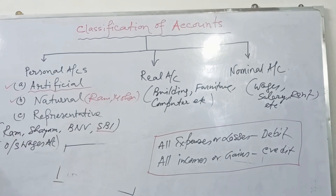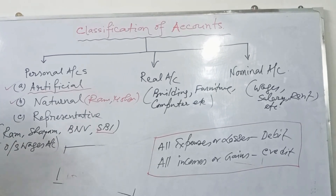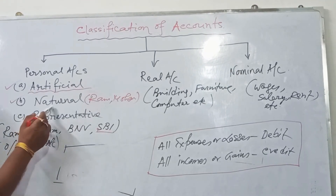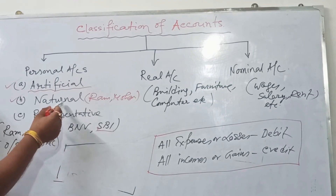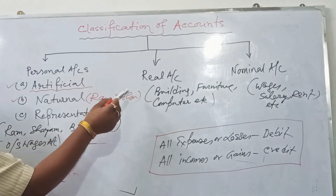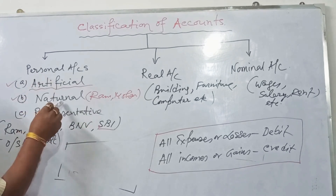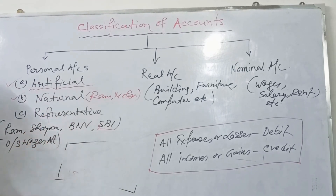Another example: Ram started business with cash, rupees 50,000. Two accounts are opened — cash account and Ram's capital account. Cash is a real account; it comes in, so cash account is debited. Ram's capital is a natural personal account. Ram is the giver, so by the golden rule — receiver is debited, giver is credited — Ram's capital account is credited.